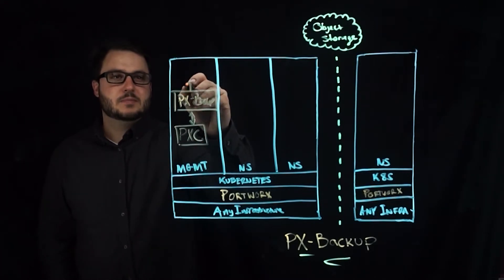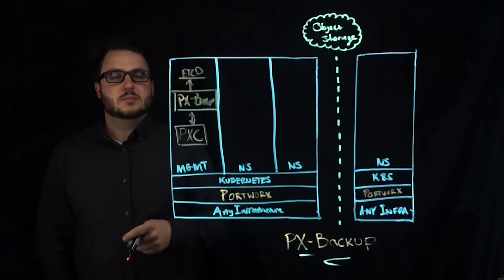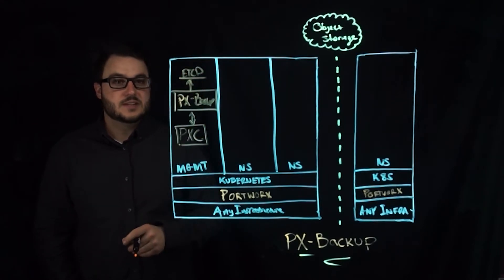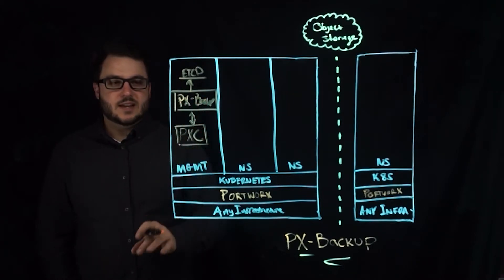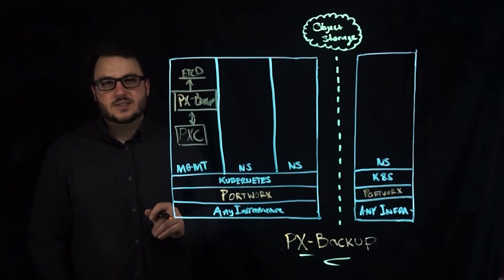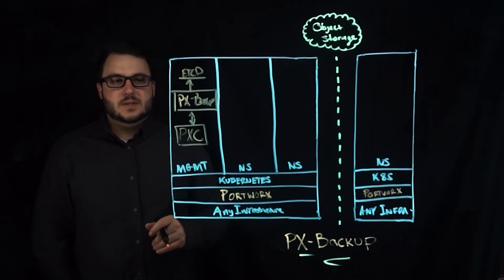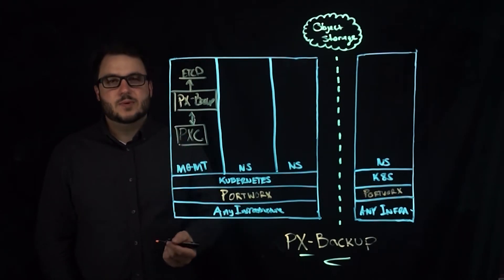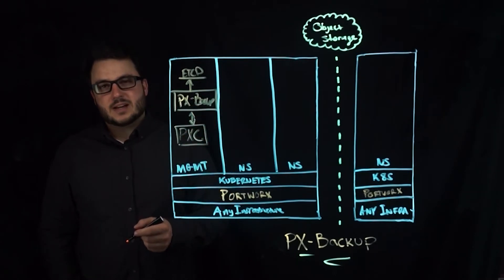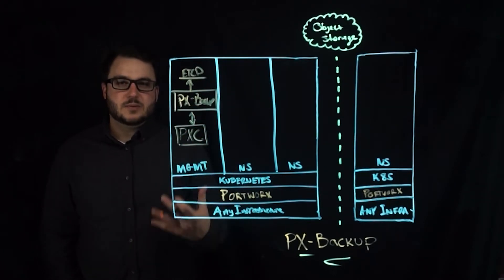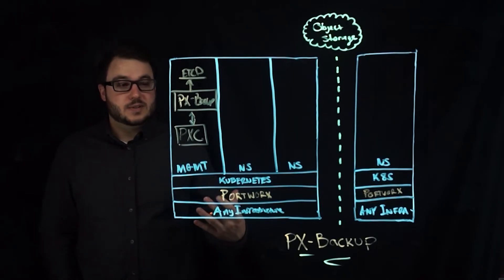PX Backup talks to etcd so make sure that's available for some cluster state. This management section here can be a small Kubernetes cluster that's running PX Central for dashboarding and monitoring and connecting it with PX Backup so that you have a single pane of glass for all your Kubernetes clusters.